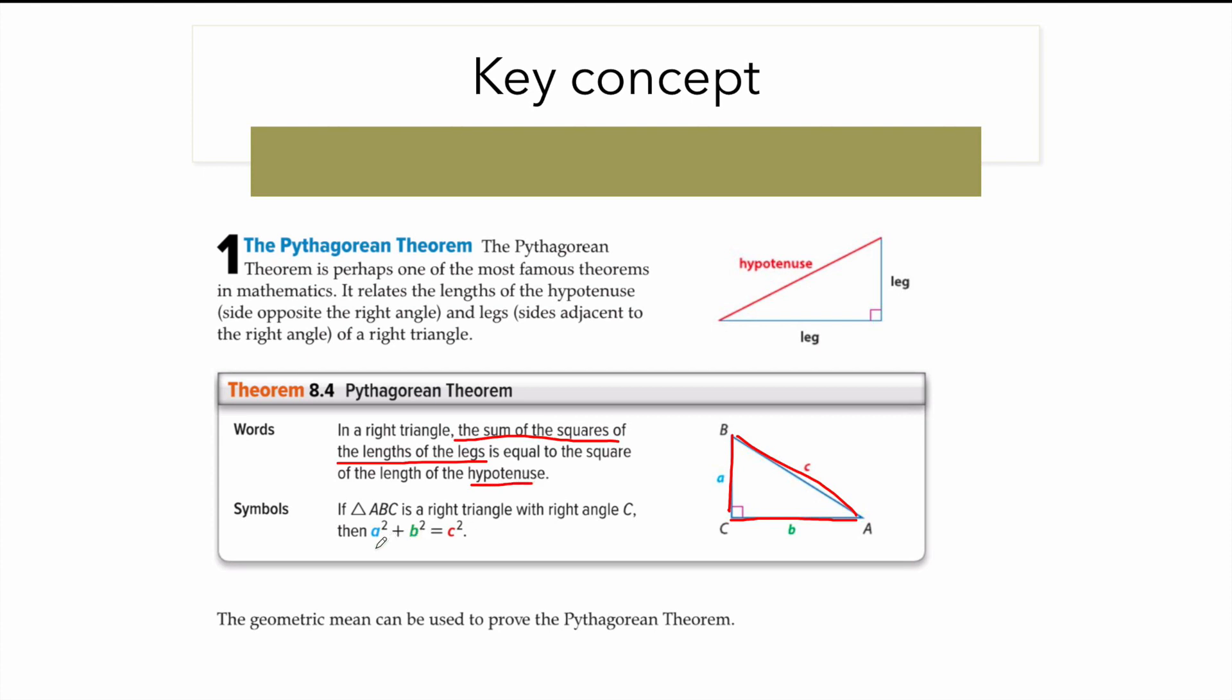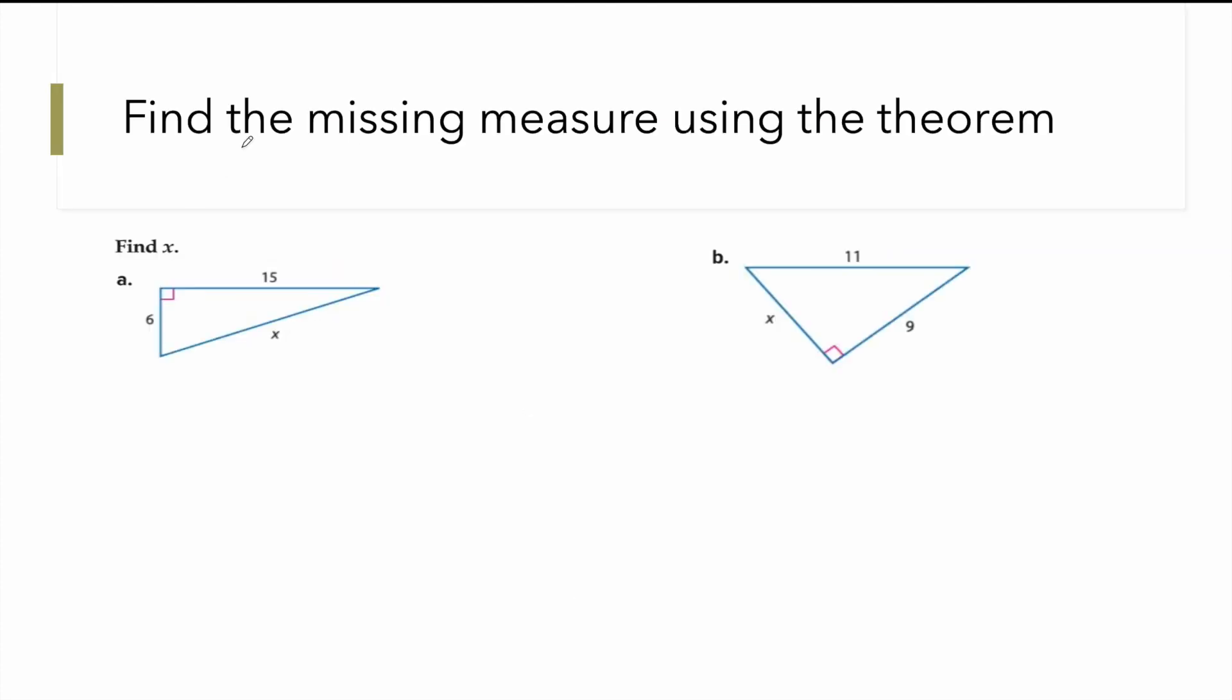In symbol it's C squared equals A squared plus B squared. Let's apply the theorem and see. Example one: find the missing measures using the theorem. Looking at this triangle we can see that 6 is the length and X is our hypotenuse.